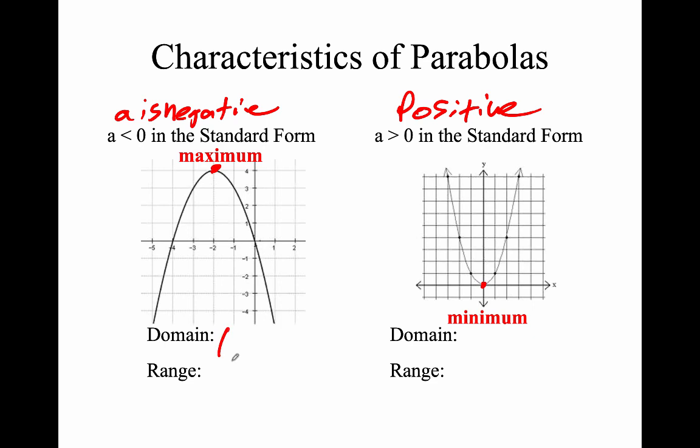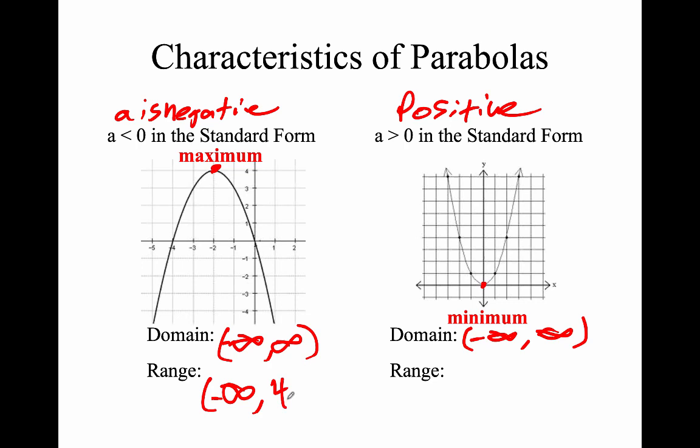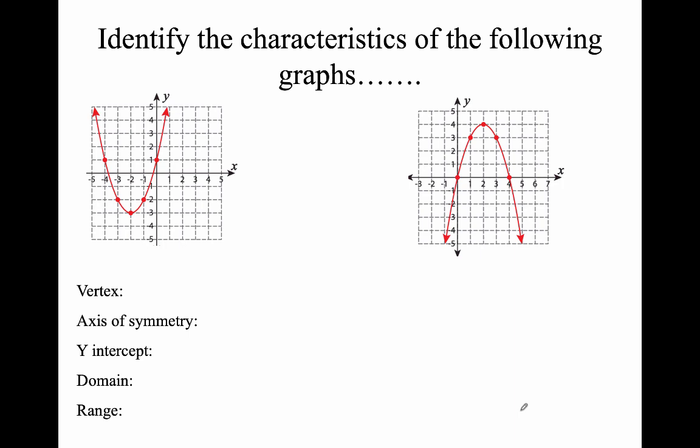The domain of all parabolas is negative infinity to infinity. The range will depend on whether we have a maximum or minimum. Notice we go all the way down and come up — in one case to 4, in another we start at 0 and go up forever. We're going to find all of these things for each and every one of these graphs.